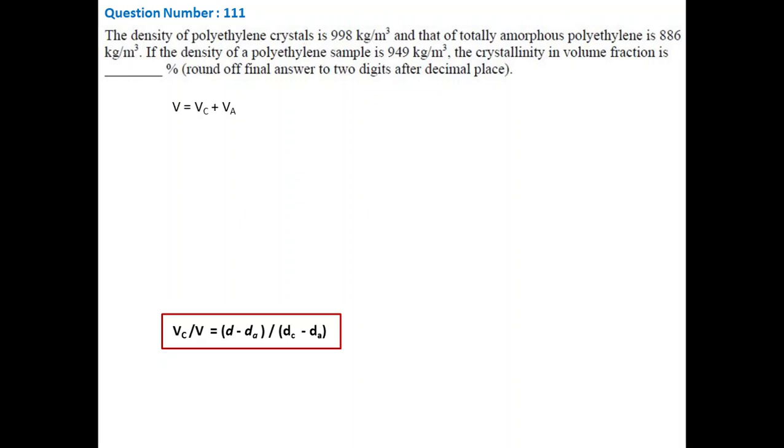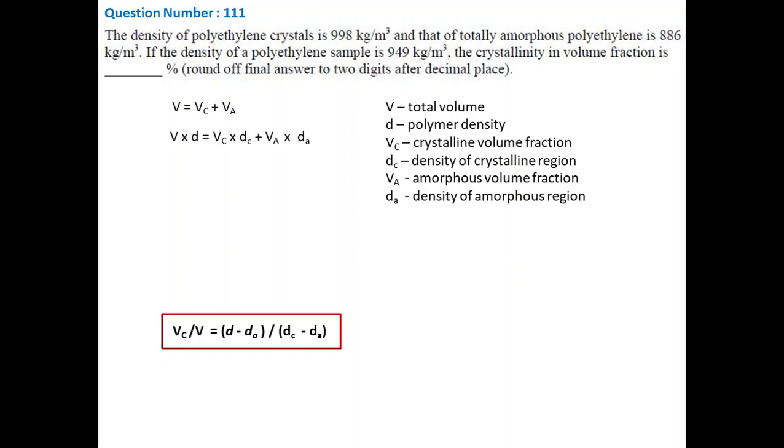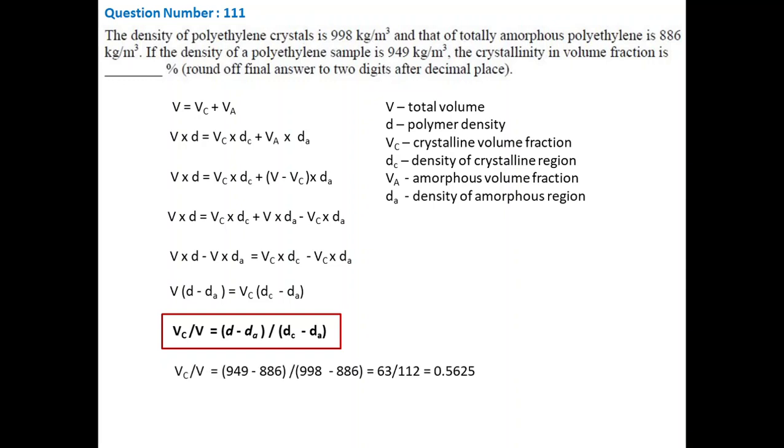First, the total volume equals volume of amorphous and crystalline part, and total mass will be the sum of volume multiplied by their respective densities. Now by substituting the amorphous volume by total volume minus crystalline volume, and after rearrangement, we will get the equation between crystalline volume fraction and polymer density. As densities are given, we can simply put those values in the equation and calculate the percentage crystallinity. The answer is 56.25 percent.